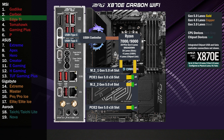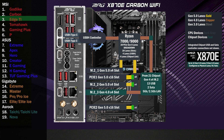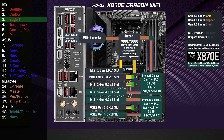On to the chipset. The first chip connects to the CPU with the four-lane uplink. This chip connects to the third M.2 with four lanes at Gen 4. A four-lane link connects to the second chip, connecting an M.2 with four Gen 4 lanes and a x16 slot with four lanes at Gen 4.